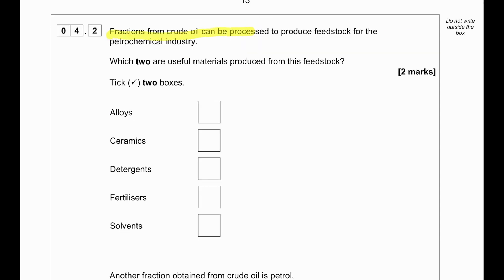Fractions from crude oil can be processed to produce feedstock for the petrochemical industry. Which two are useful materials produced from this feedstock? Alloys are made from metals, ceramics are made from clay, detergents are made from fossil fuels, and we know that fertilizer is made from nitrogen and ammonia. Solvents are made from crude oil.